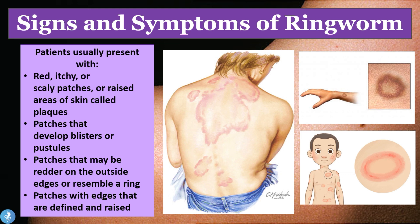So the signs and symptoms of ringworm: patients usually present with red, itchy, or scaly patches, or raised areas of skin called skin plaques. Patches can also develop blisters or pustules, meaning they can become filled with fluid or even pus. The patches are usually redder on the outside and resemble a ring, with edges that are defined and raised — a very clear-cut, defined edge, not a skin-infiltrating edge.